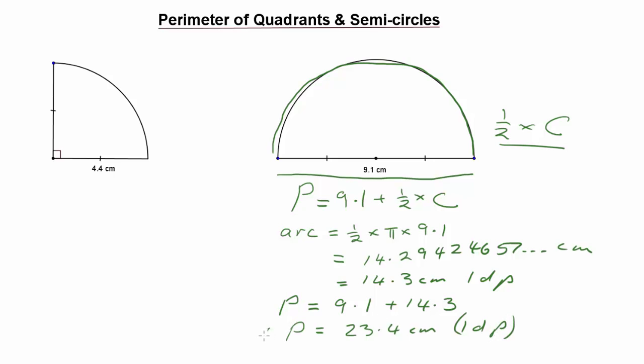Summarise and underline your answer: therefore the perimeter equals 23.4 centimetres. Thanks very much for watching this video. I hope that clears up how to calculate the circumference of circles and the perimeter of quadrants and semicircles. Thanks very much for watching.